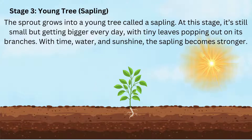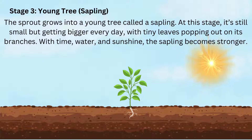Stage 3: Young Tree — Sapling. The sprout grows into a young tree called a sapling. At this stage it's still small but getting bigger every day, with tiny leaves popping out on its branches. With time, water and sunshine, the sapling becomes stronger.